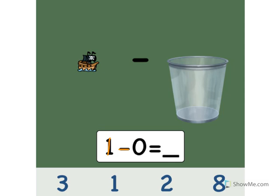1 minus 0 equals what? If we take away 0, that means we're taking away nothing. So what do we have left? Let's count. 1. Point to the 1. Good. We have 1. We don't take anything away, so we're left with 1. 1 minus 0 equals 1. Good.